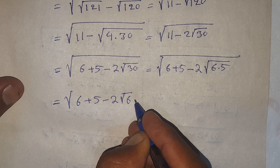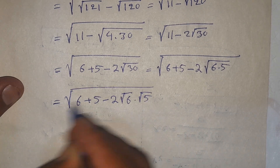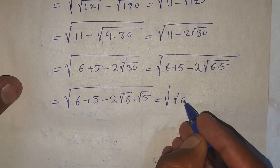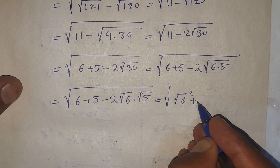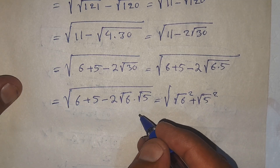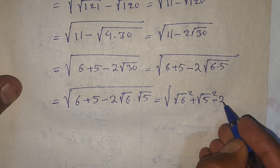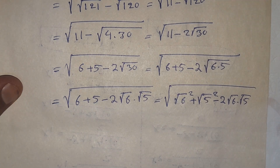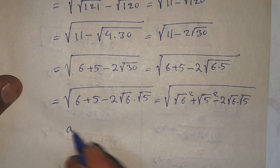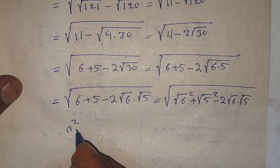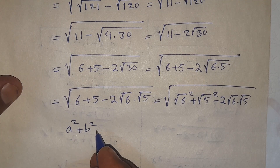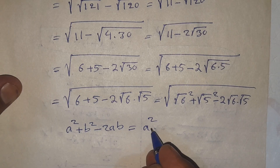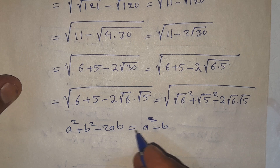This equals square root of square root of 6 squared plus square root of 5 squared minus 2 times square root of 6 times square root of 5. We recognize the identity a squared plus b squared minus 2ab, which equals (a minus b) squared.